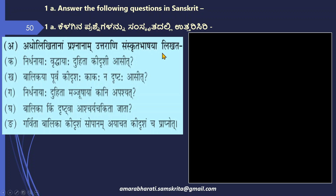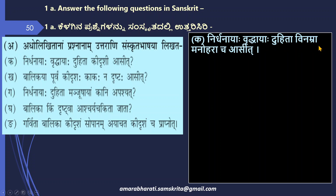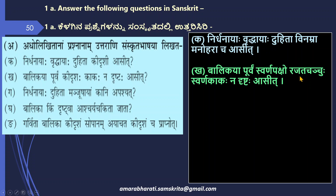Adho likhitanam prashnam uttarani Samskrita bhashaya likhata — answer the following questions in Sanskrit. Nirdhanayaha vridhanayaha duhita kidrishim asit — what kind of girl was the poor lady's daughter? Nirdhanayaha vridhanayaha duhita vinamra manohara cha asit — she was humble and beautiful. Balikaya poorvam kidrishaha kakaha na drishtaha asit — what kind of crow had the girl not seen earlier? Balikaya poorvam Swarna paksho rajata chanchuhu Swarna kakaha na drishtaha asit — she had not seen a golden crow with golden wings and a silver beak.